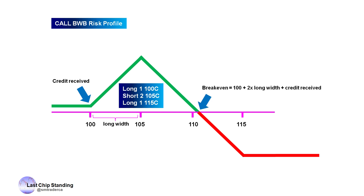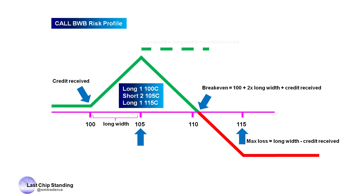The breakeven price is when the underlying expires at 110 plus the amount of credit we receive. If we receive a credit of 50 cents, for example, then the breakeven price is $110.50. We will incur maximum loss when the underlying expires at 115 or higher, and that amount is the width of the long vertical minus the credit we receive. In this example, the width is $5 and the credit is 50 cents, so the maximum loss is $4.50. We will realize maximum profit if the underlying expires at the short strike of 105. The maximum profit is the width of the long vertical plus the credit we receive — in this example, that is $5 plus 50 cents, which is $5.50.